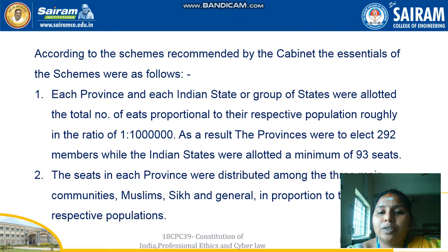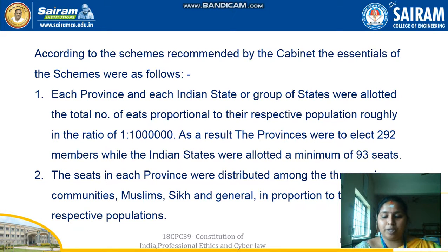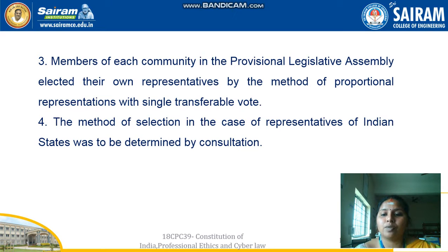As a result, provinces were to elect 292 members while Indian states were allotted a minimum of 93 seats. The seats in each province were distributed among three main communities — Muslim, Sikh, and General — in proportion to their respective populations. Members of each community in the provisional legislative assembly elected their own representatives by the method of proportional representation with single transferable vote. The method of selection for representatives of Indian states was determined by consultation.